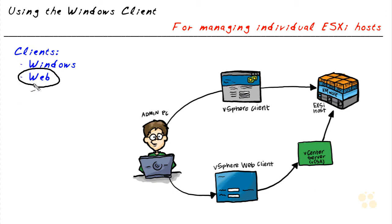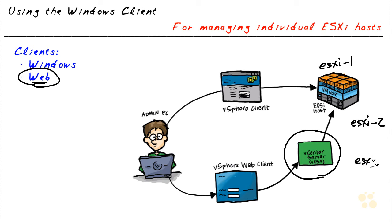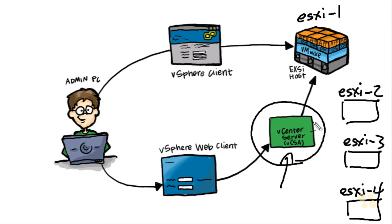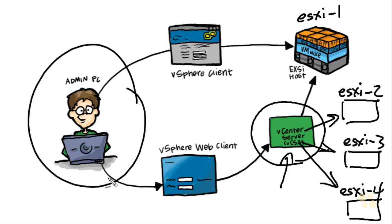Before we can use the vSphere Web Client, we have to have a vCenter server — the enterprise manager that interfaces directly with all the ESXi hosts. So if we have ESXi1, ESXi2, ESXi3, and ESXi4, we would deploy a vCenter server and associate it with each of those ESXi hosts. Then as administrators, we would open up a browser, connect to vCenter server, and at that moment we are using the vSphere Web Client.